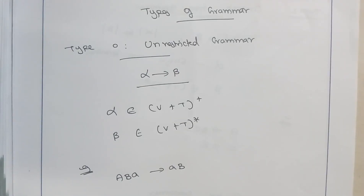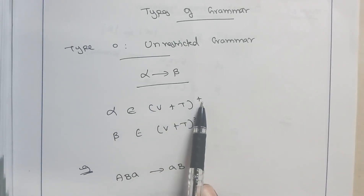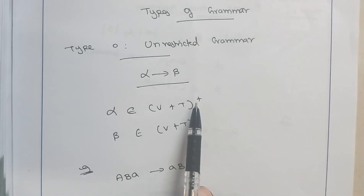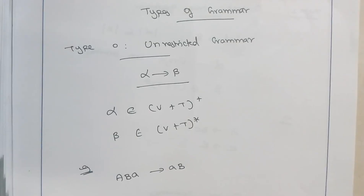Type 0 grammar is called an unrestricted grammar — there is no restriction over this grammar. Whenever it is a grammar, it is of the format alpha tends to beta. Alpha is made up of the combination of variable and terminal, where the plus denotes a union operation — it might be either a variable or a terminal. The power of plus denotes a positive closure over variable and terminal, meaning it must contain at least one variable or terminal or a combination. Plus denotes one or more combination.